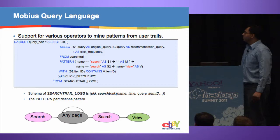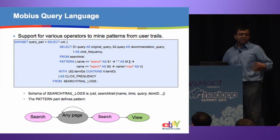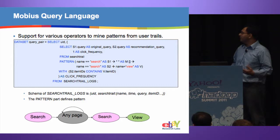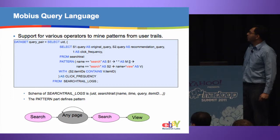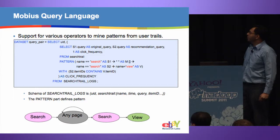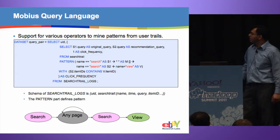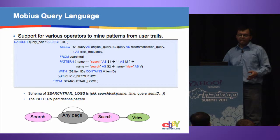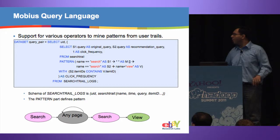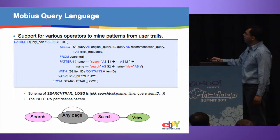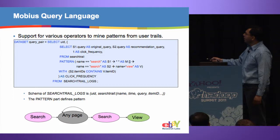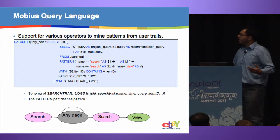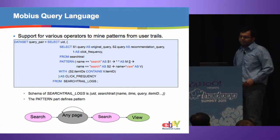We use the Mobius query language because we are interested in what users are doing on site — how they transition from page to page and what events they go through. Mobius provides seamless operators to mine such patterns from user trails. For example, if we want all user sessions where a user performed a search, did some activity, and then did another search leading to success — viewing or purchasing a product — we can do it with just a couple of lines of MQL code.